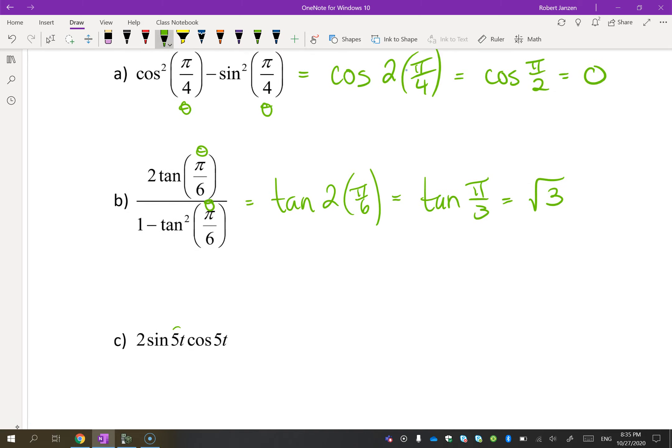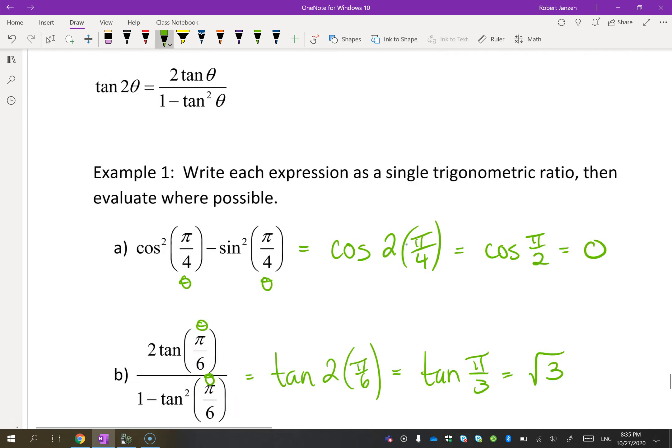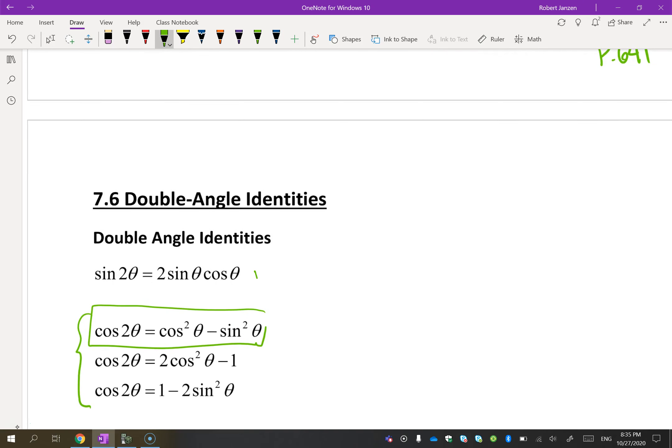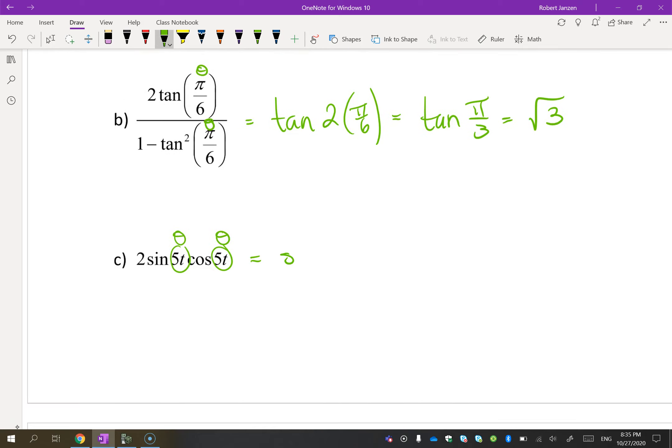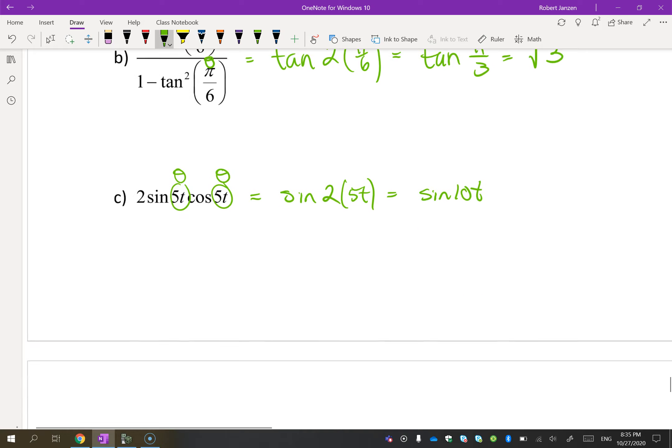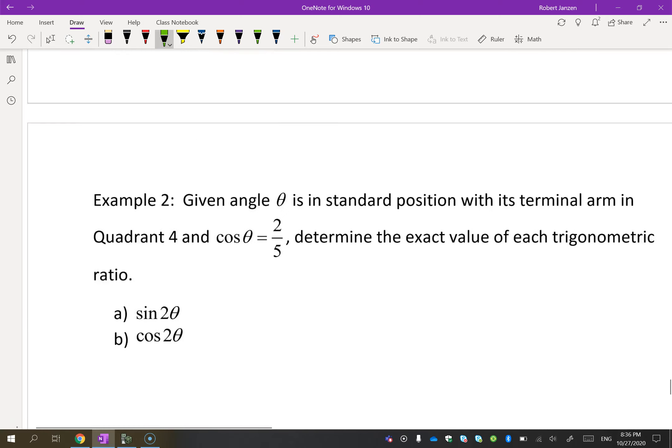Let's try this one. Here our theta is 5t. So do we have a formula that's 2 sine theta cos theta? That's this one here. So I know I can change this to sine 2 theta, but again, it's not theta, it's 5t. So this is sine of 10t. These are some of the double angle identities.